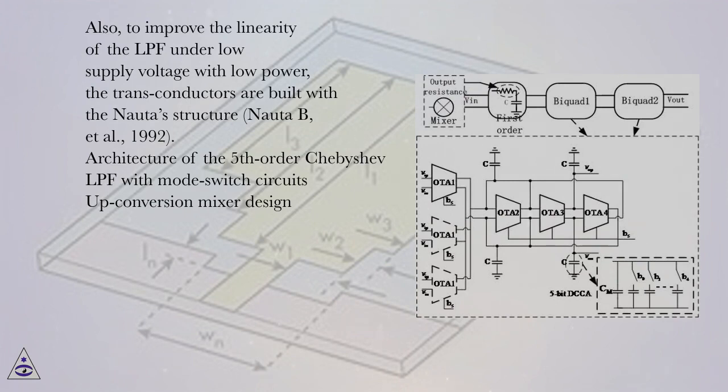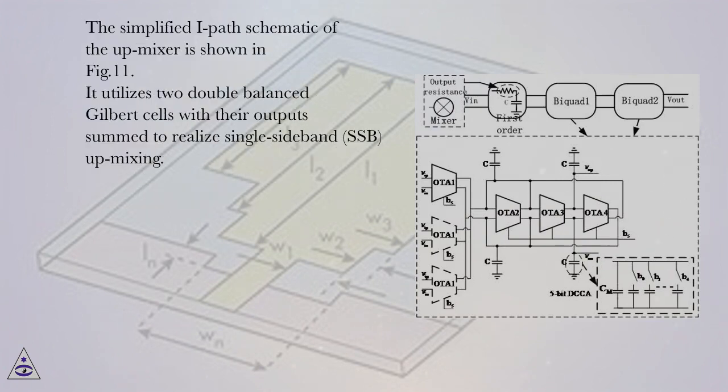Architecture of the fifth-order Chebyshev LPF with Mode Switch Circuits. Up-Conversion Mixer Design: The simplified I-path schematic of the up-mixer is shown in Fig. 11. It utilizes two double-balanced Gilbert cells with their output summed to realize single-sideband (SSB) up-mixing.